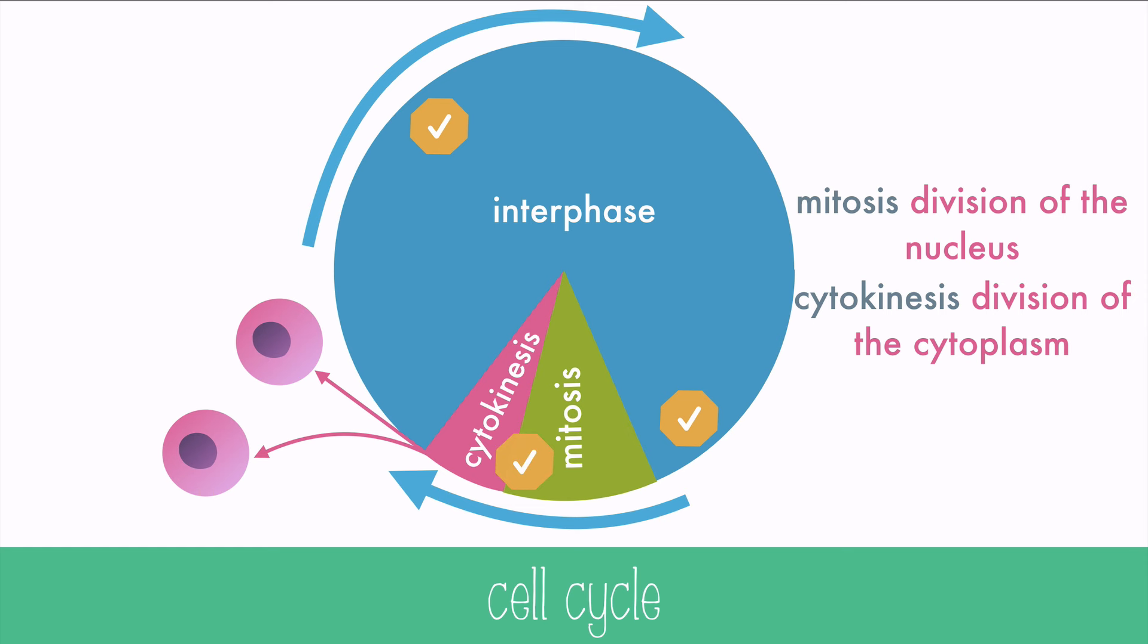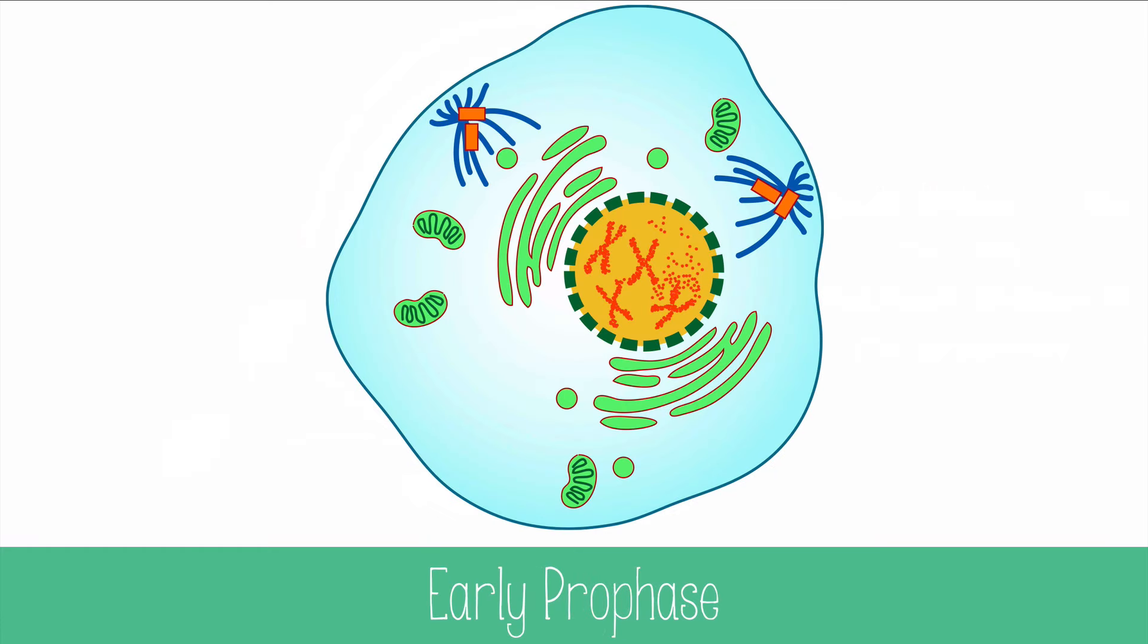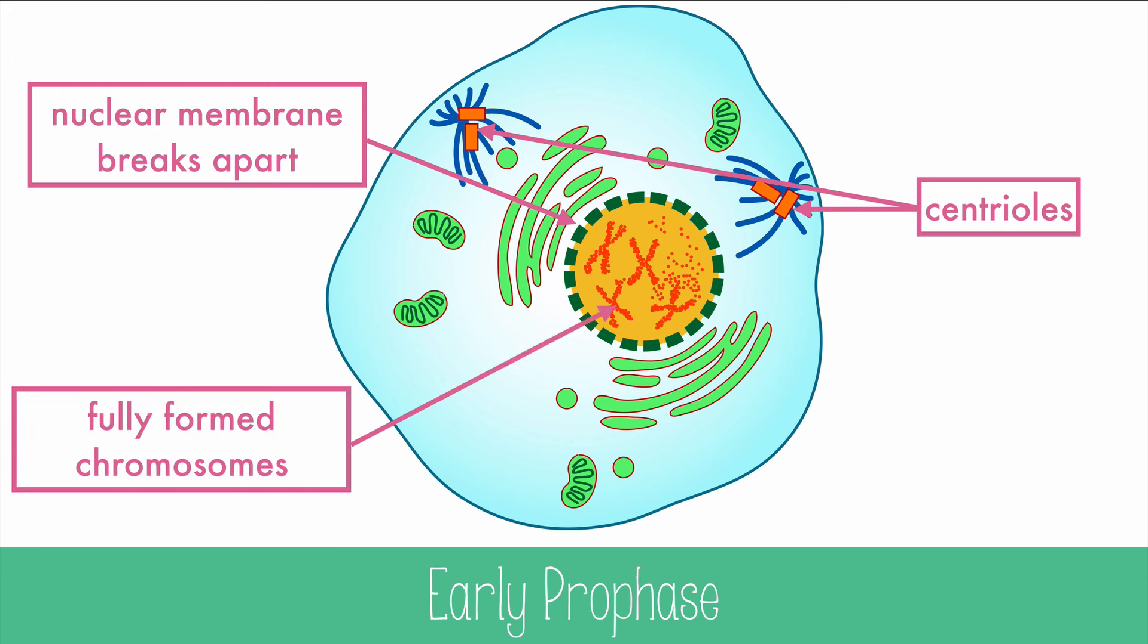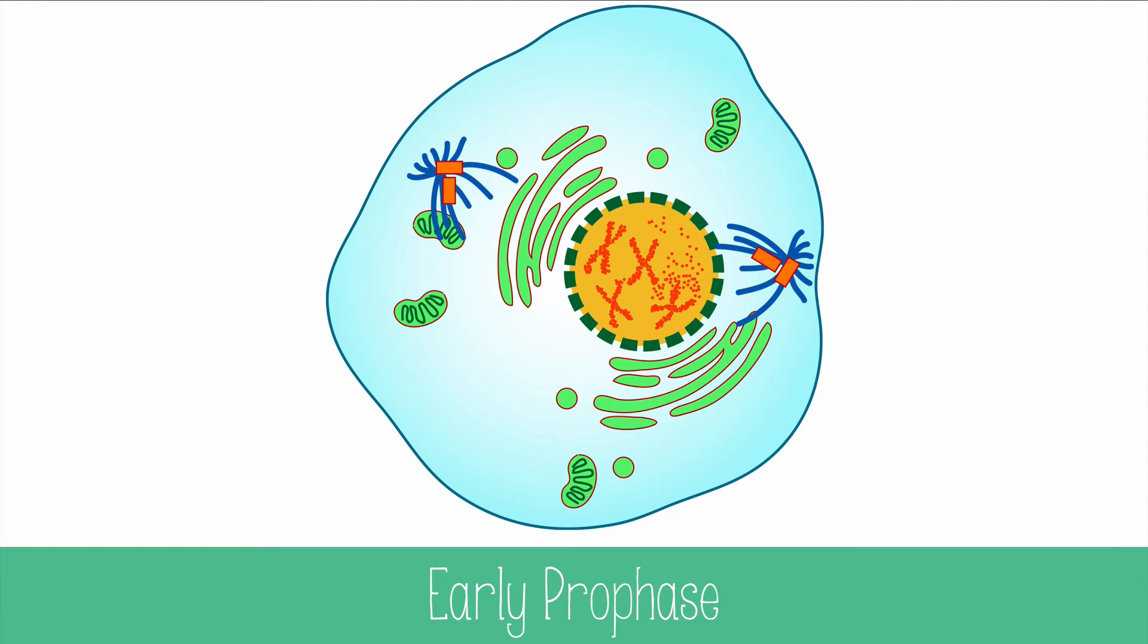Let's look at the beginning of mitosis. The first stage is prophase, which is sometimes divided into early and late prophase. In early prophase, the centrioles begin to form spindle fibers, and the nuclear membrane breaks apart, and the chromosomes are fully formed. Then the centrioles migrate toward the poles of the cell.